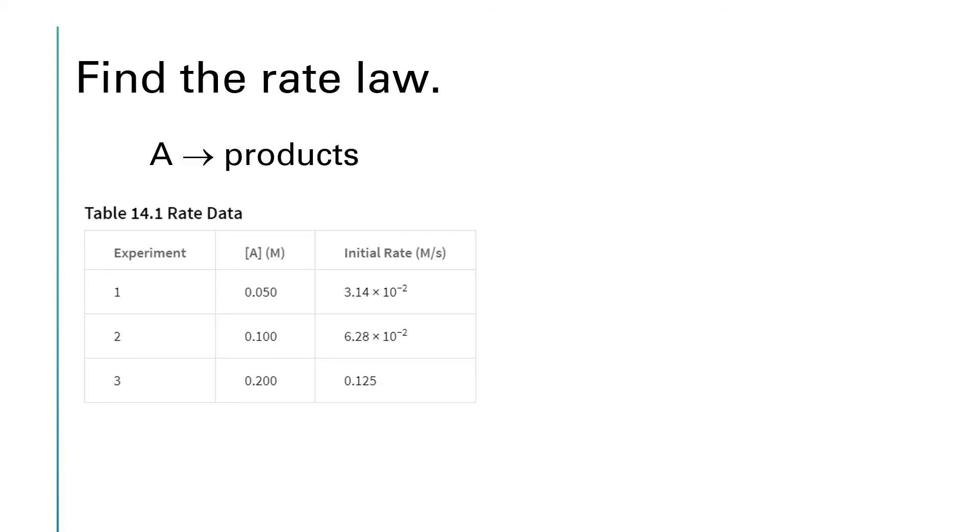Let's work an example of the method of initial rates that has a fairly easy chemical reaction to work with. In this reaction, A yields products. There's only one reactant to worry about. So we don't have to worry about picking two experiments where all the other reactants cancel out because there's only one to deal with. Our only concern as we take our ratios is that we want the bigger number on the top and the smaller number on the bottom.